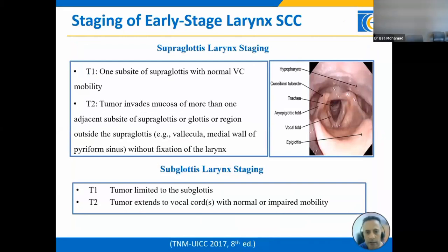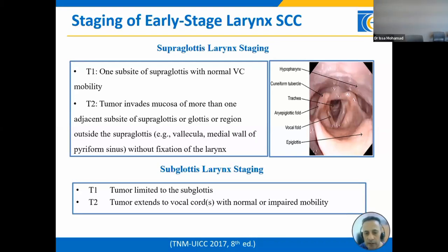For staging of the supraglottis: T1 is tumor involving one sub-site with intact mobility, for example the false cord. T2 is tumor involving two sub-sites of the supraglottic larynx, for example false cord with epiglottis with intact vocal cord mobility, or tumor involving regions outside the larynx such as the pyriform sinus medial wall. For the subglottic larynx: T1 is tumor limited to the subglottis; T2 is tumor extending to the vocal cords with normal or impaired mobility.